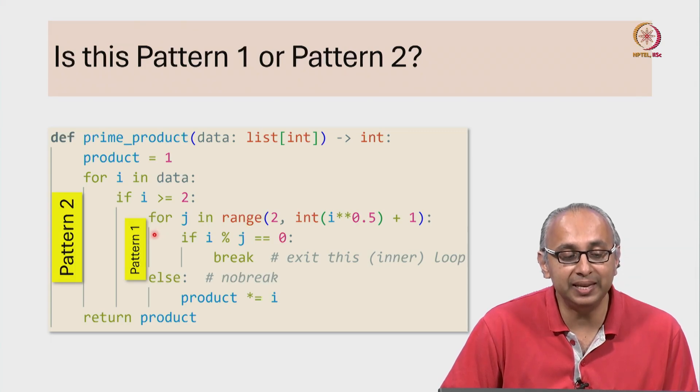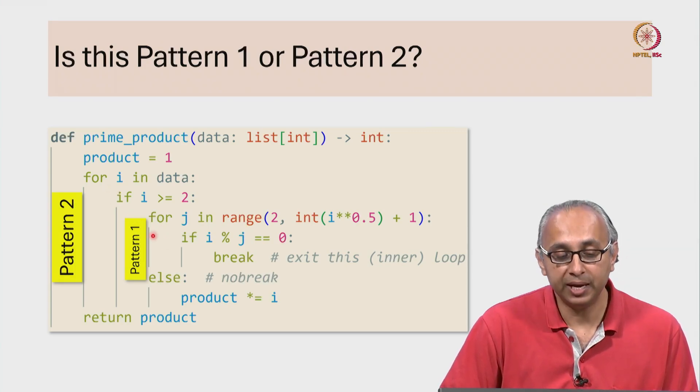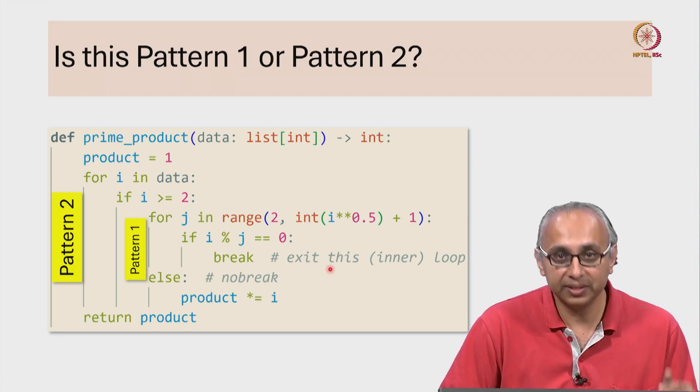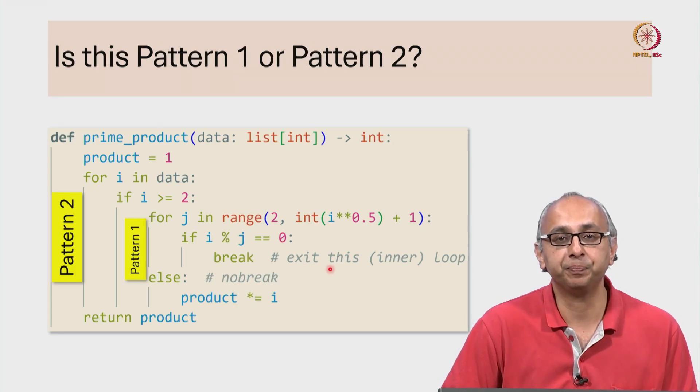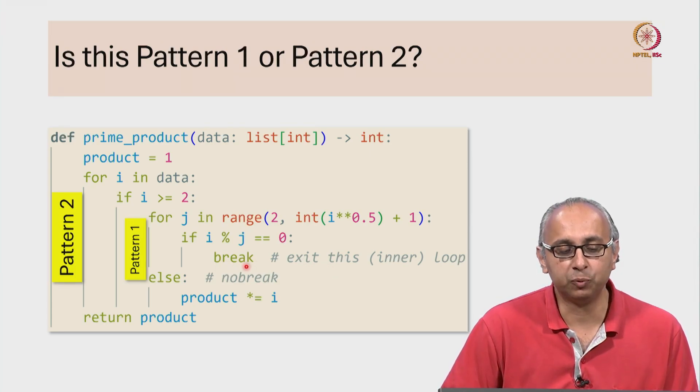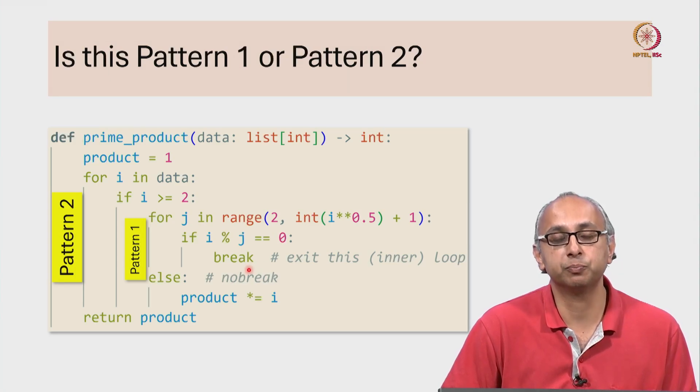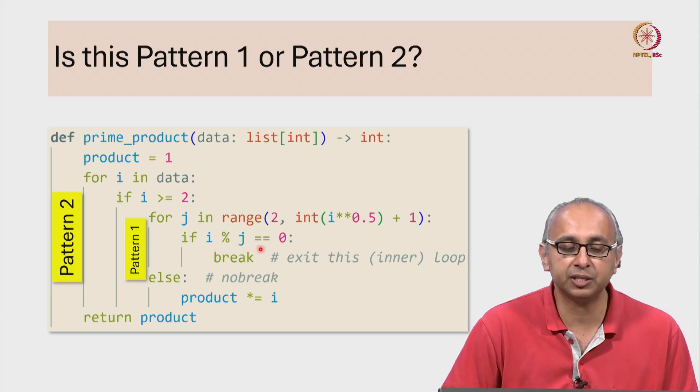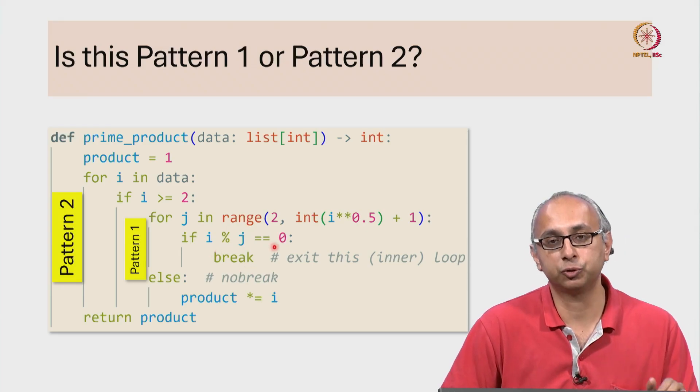Now since this loop is sitting inside this outer loop, it's important to remember that this break statement will exit this inner loop only. Now where exactly will control flow after hitting this break? To explain that, let me first explain what would happen if this condition was never true.